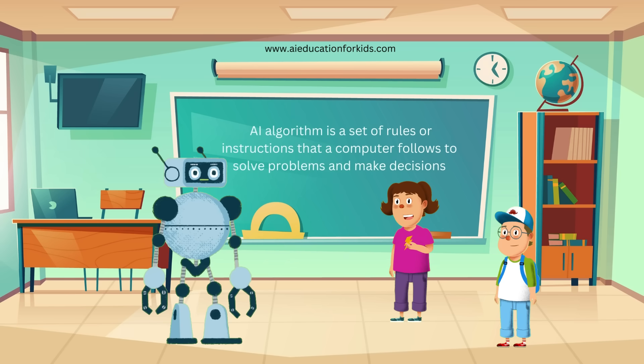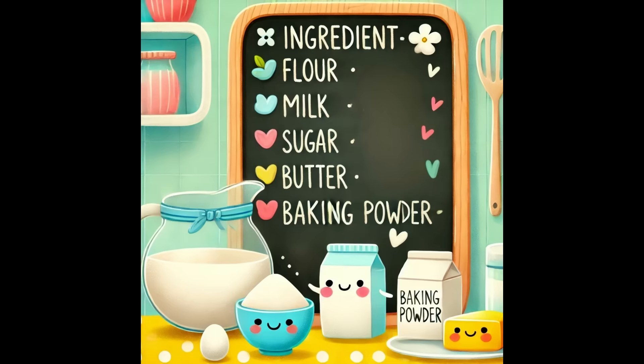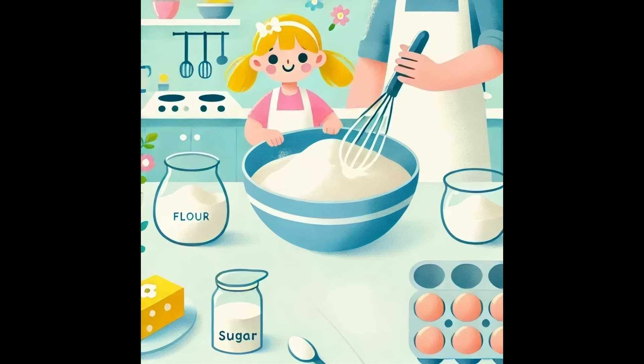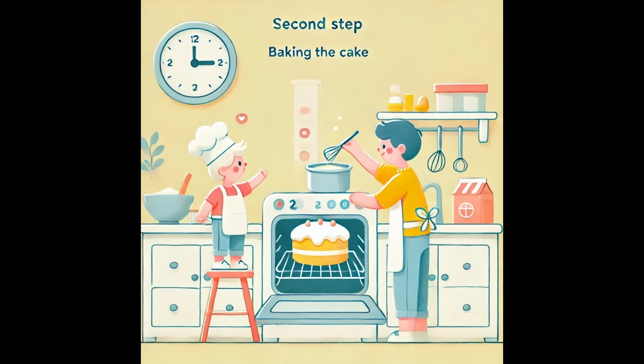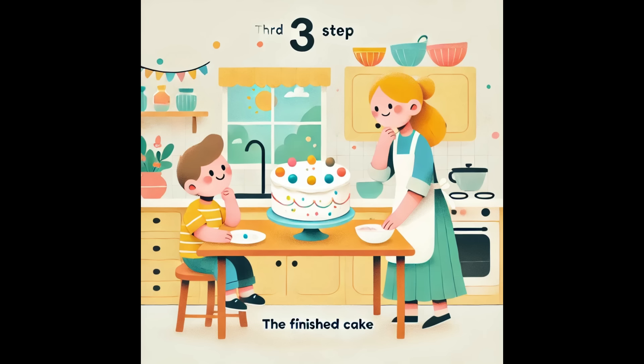How do algorithms work? For example, when you bake a cake, you follow a recipe. First, you mix the ingredients, then you bake it, and finally you have a cake. An AI algorithm works the same way by following steps to solve a problem.